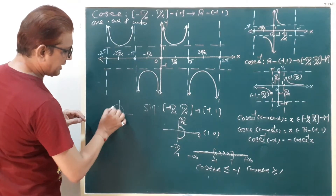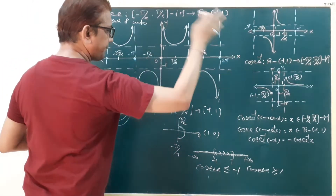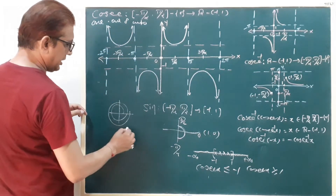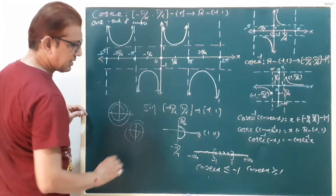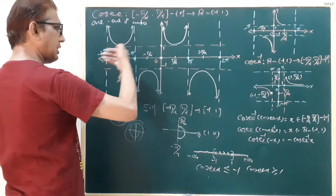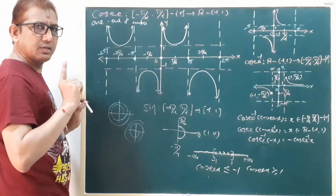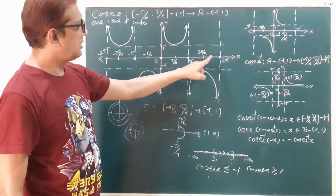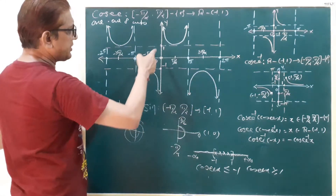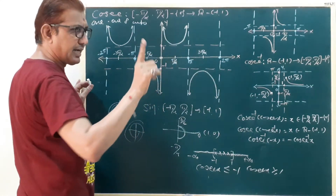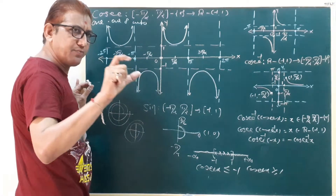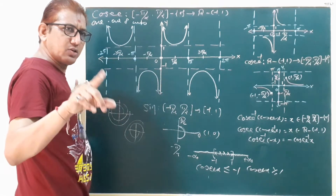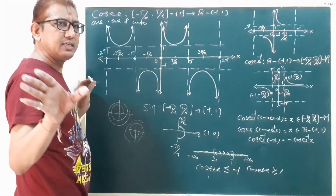If we rotate anticlockwise, we get the right side of the y-axis. If we rotate clockwise, we get the left side of the y-axis. At key points pi by 2, pi, 3 pi by 2, and 2 pi, the graph is cosecant — the reciprocal of sine. So whenever the sine function is increasing or decreasing in each quadrant, the corresponding cosecant function is decreasing or increasing in each and every quadrant.